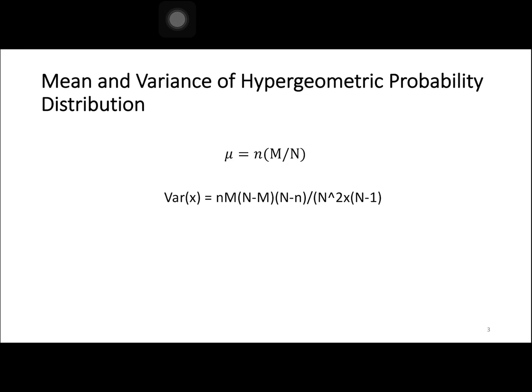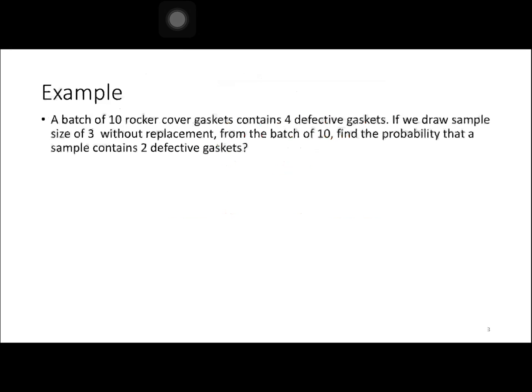For the mean and variance of the hypergeometric probability distribution, mu is equal to n times M over N — sometimes referred to as P, the probability of success. The variance is computed as: n times M times (N minus M) times (N minus n), divided by N squared times (N minus 1).